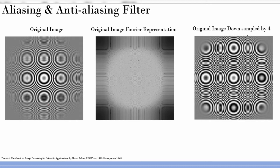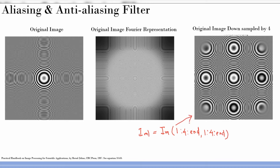Now what I am going to do is take this image and kill it in such a way that I take every fourth sample in both horizontal and vertical direction. So the new image IM1 is basically 1:4:end in both dimensions. And you can see that the image is completely gone — this property is known as aliasing.